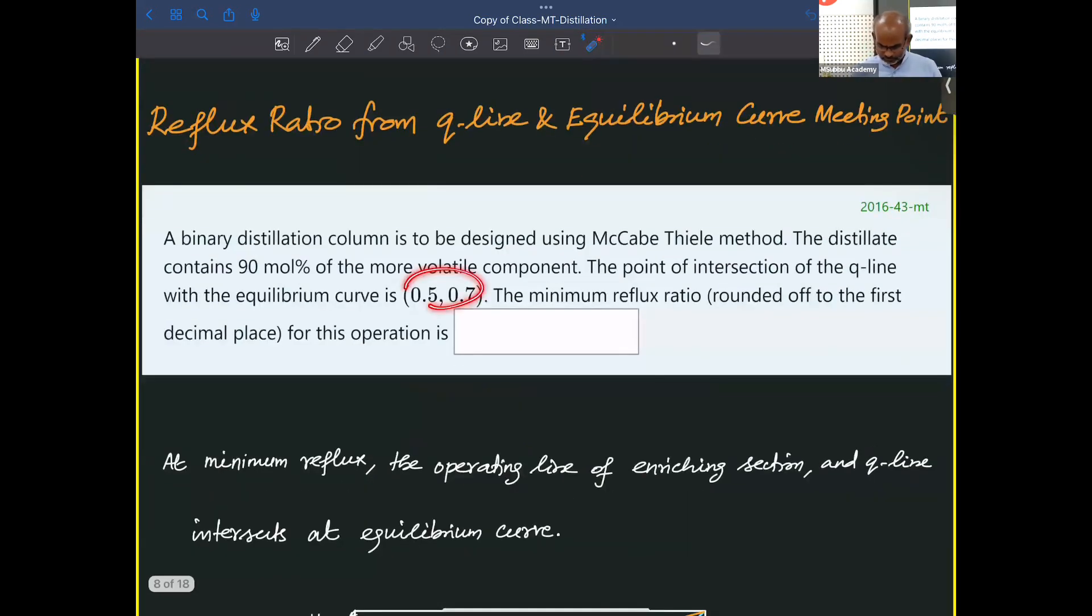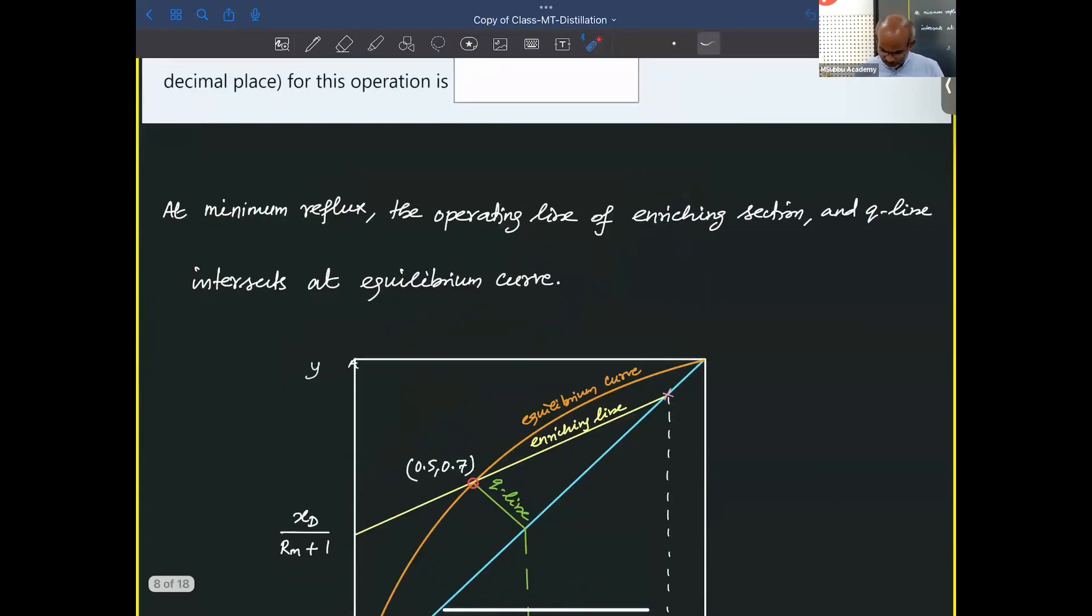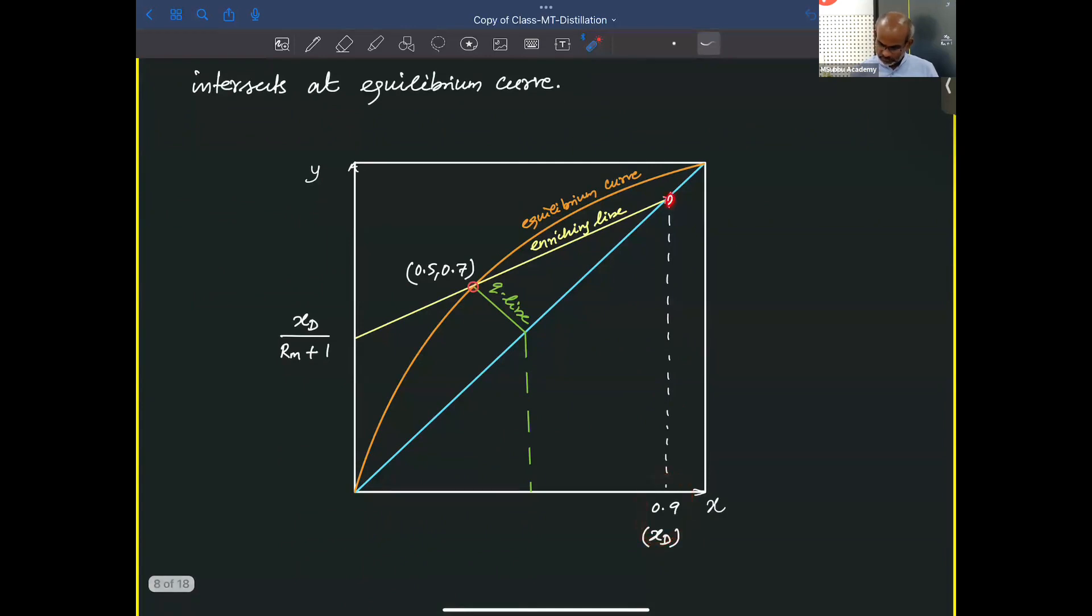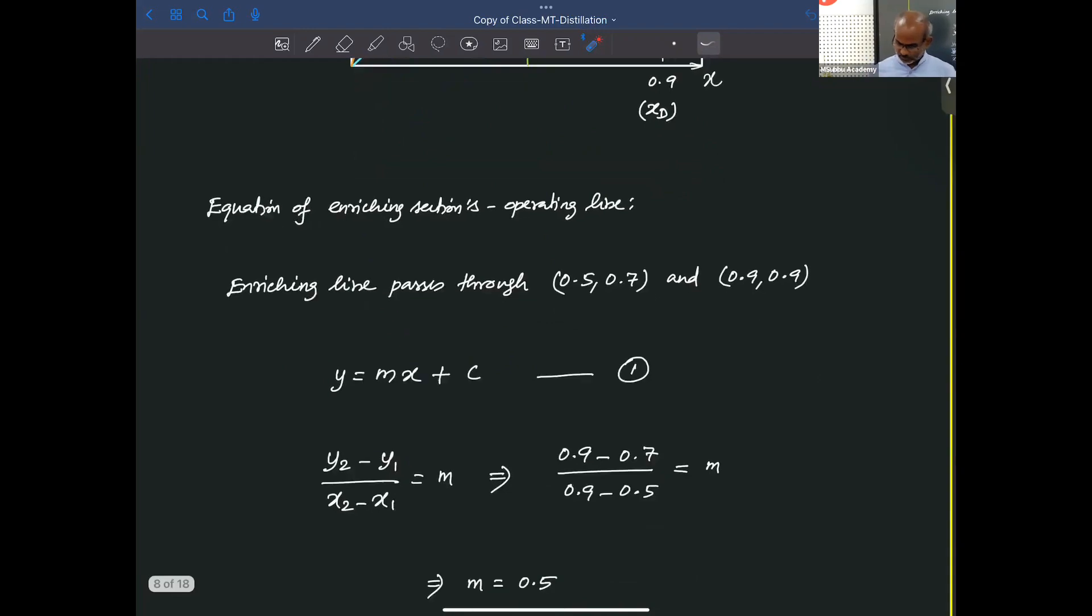We are given with the meeting point of feed line and equilibrium curve. That is also the meeting point of Q line and enriching line. We know one data point for the enriching line. Additionally, we also know the other point that is XD, which is (0.9, 0.9). Using these two points, we are going to make the equation. That intercept of that equation is XD/(RM+1). From that, we can solve for RM.